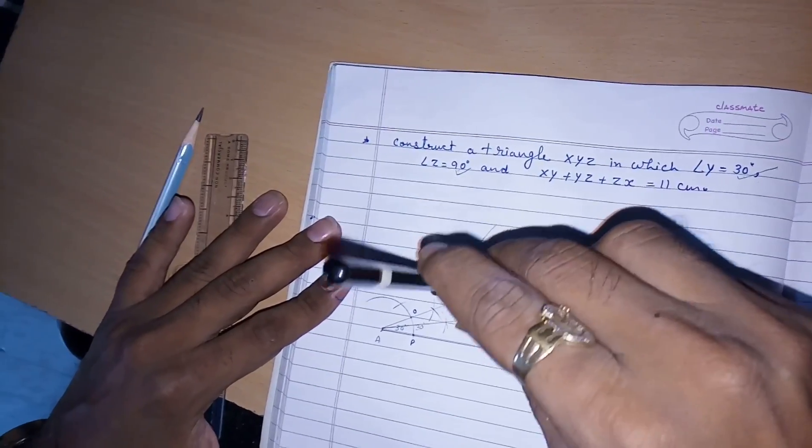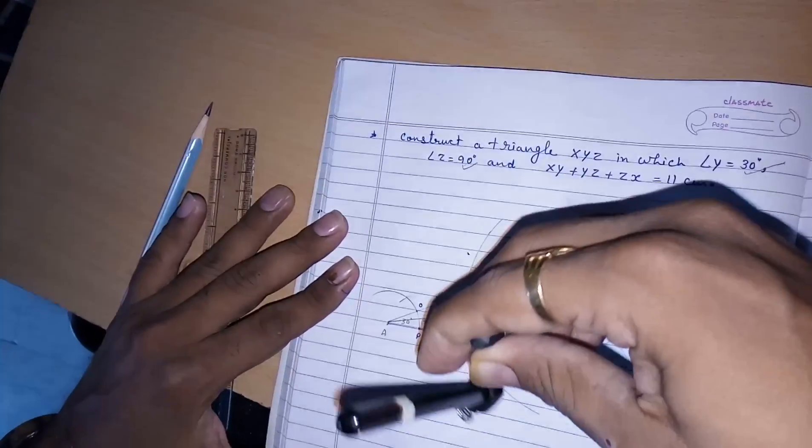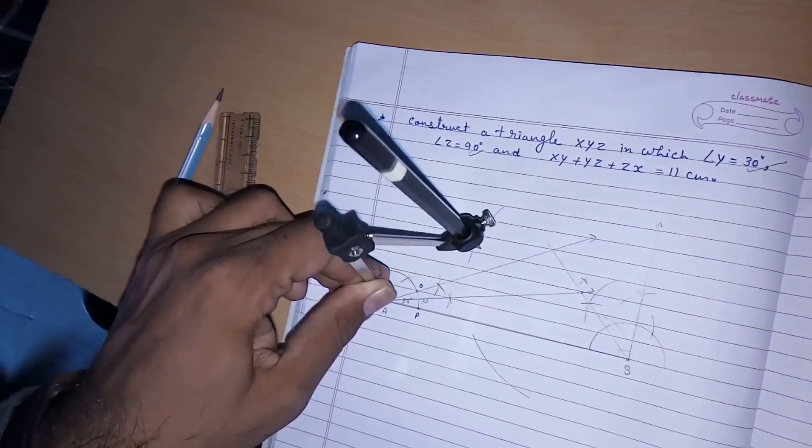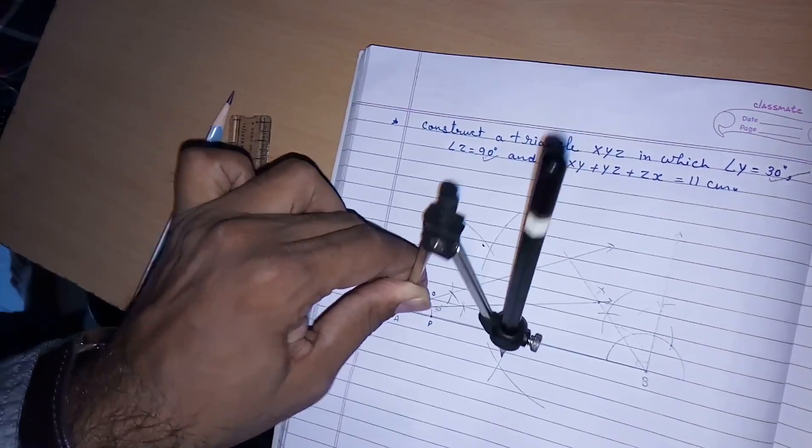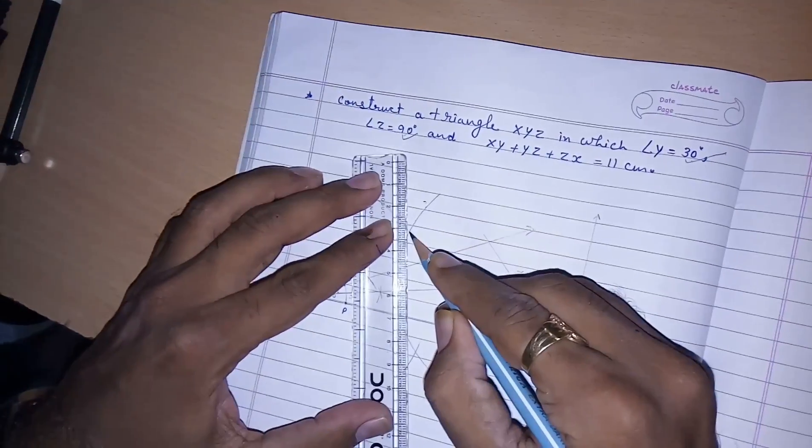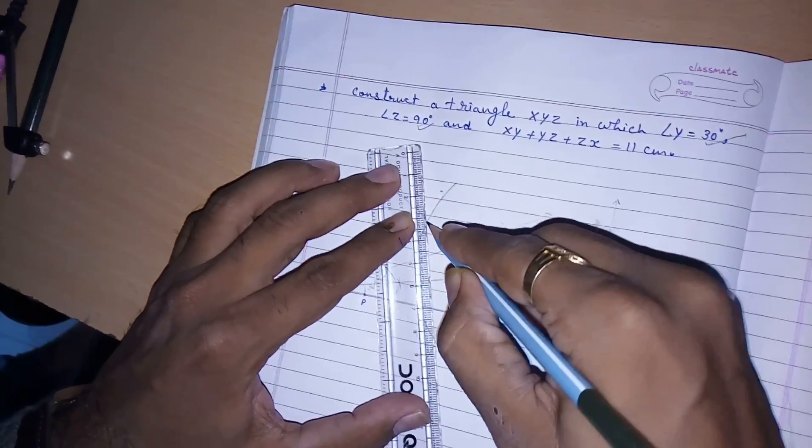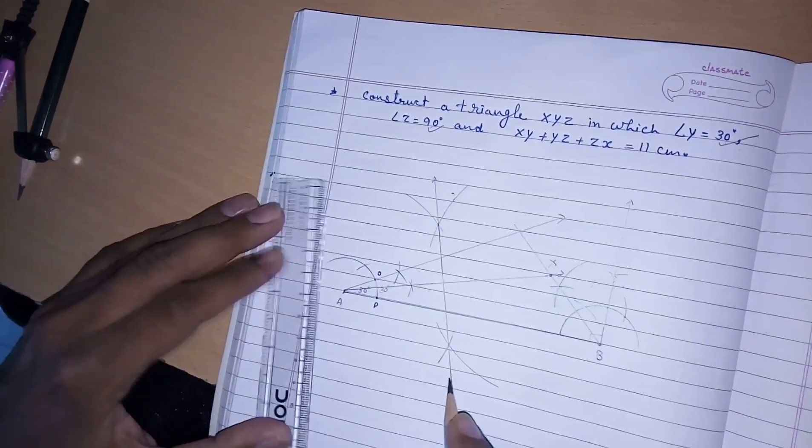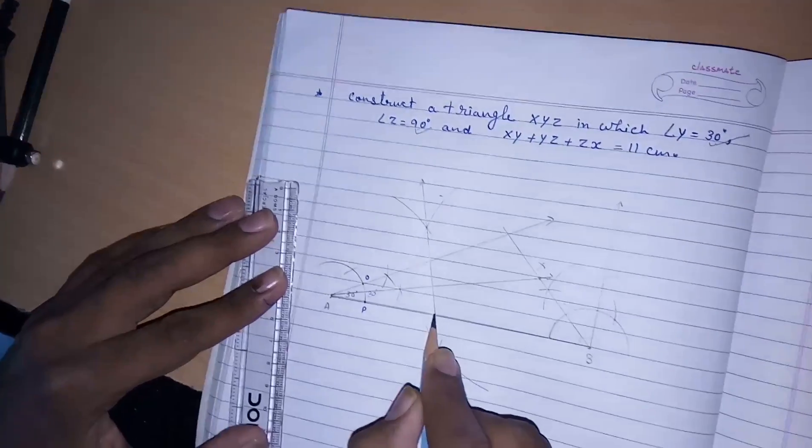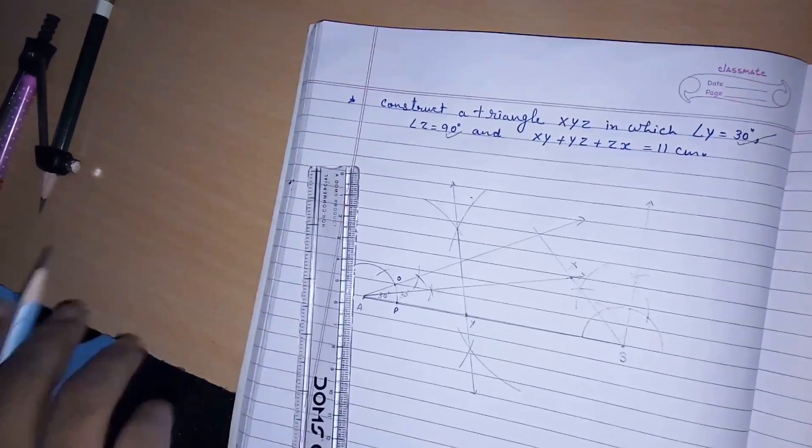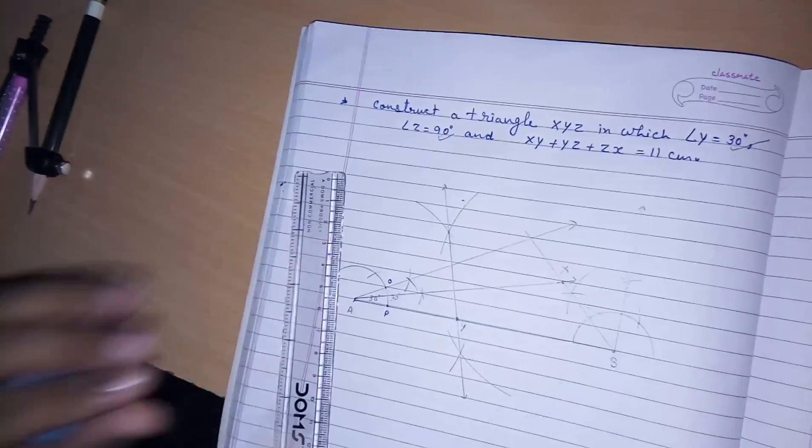We should take more than half on both the sides. So, here we will get a line which will intersect at AB at this point. Give this point name Y and then perpendicular bisector of X and B.